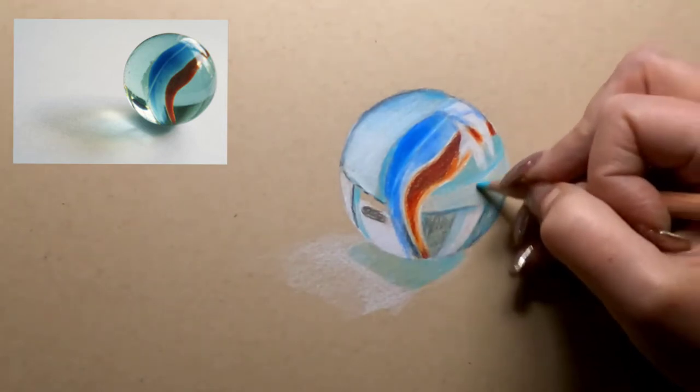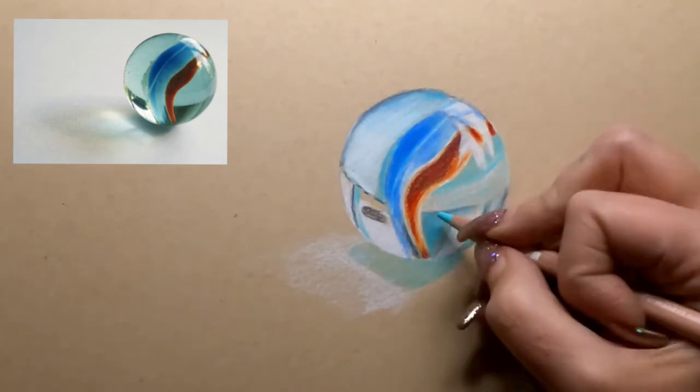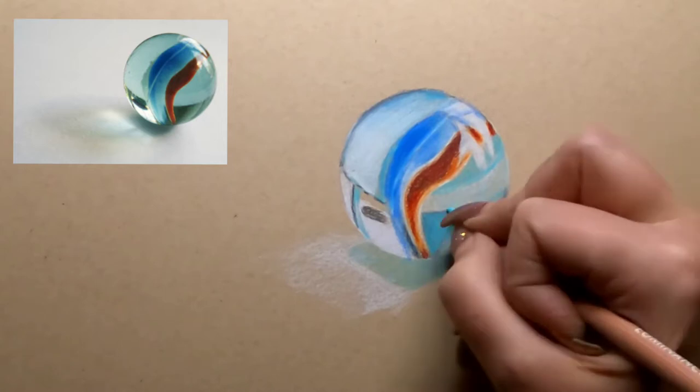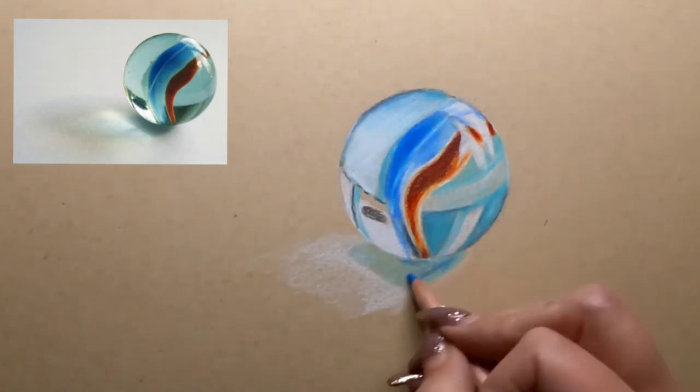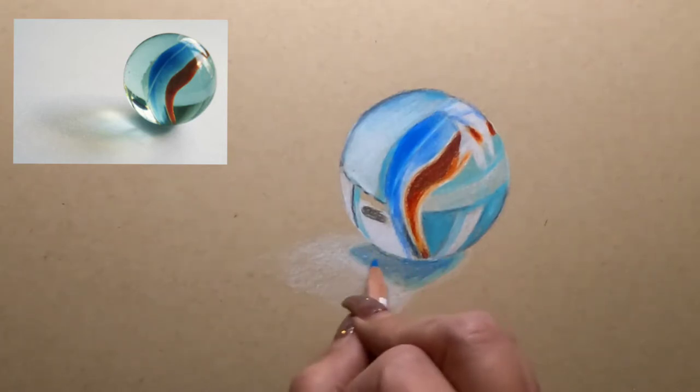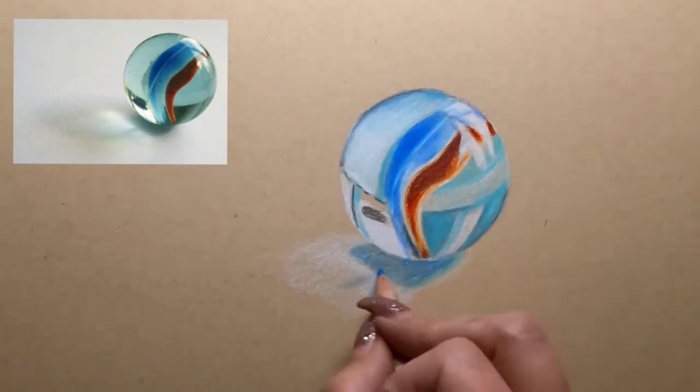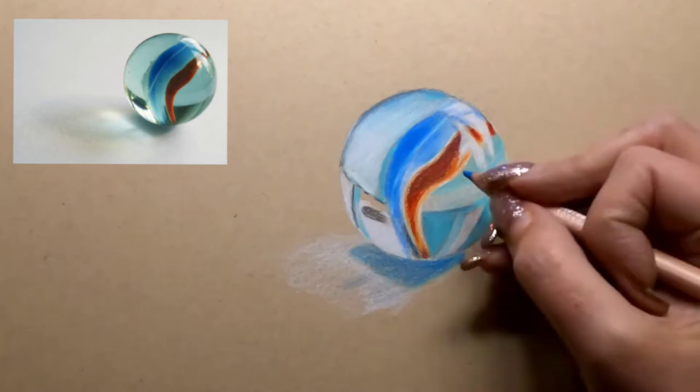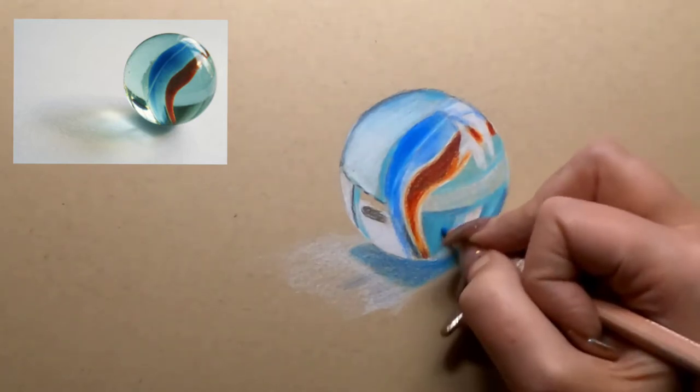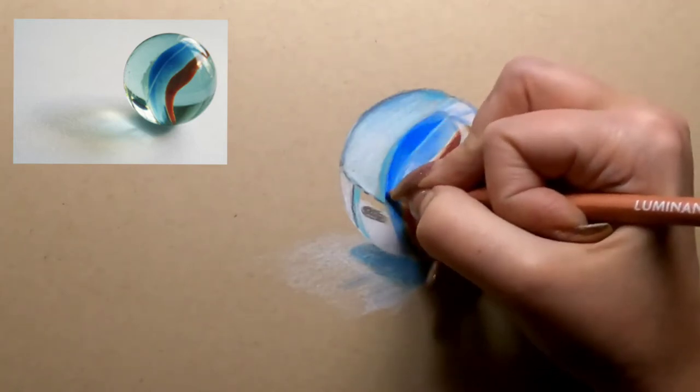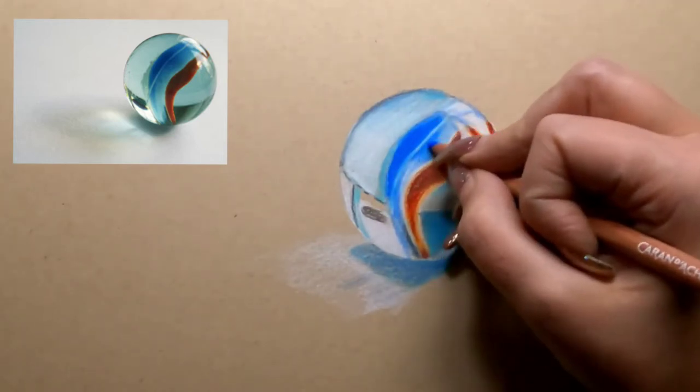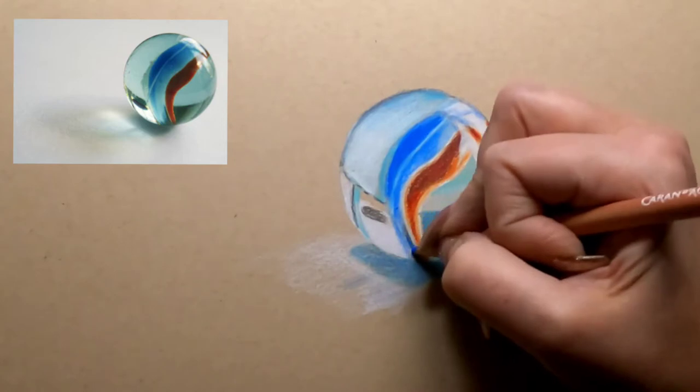With color pencil you get your richest looks when you layer multiple colors together. This way some of your underlying layers show through and your upper layers will blend with those bottom layers. It just gives you a much richer effect and a much more hyper-realistic look to the drawing than just going in with one red or one blue. So you want to mix and blend as you're going right on the paper.